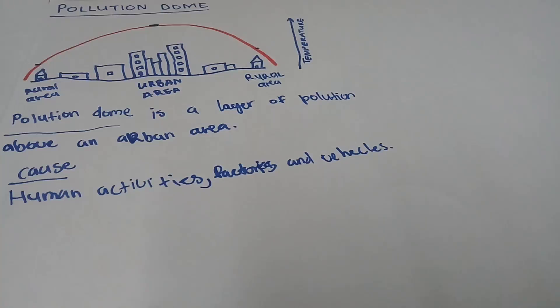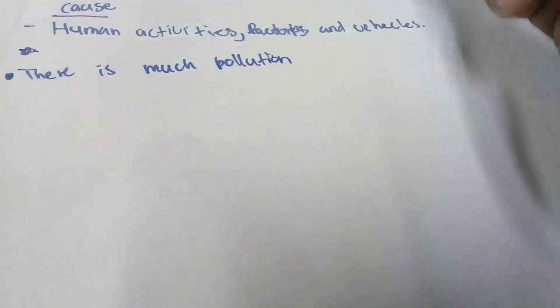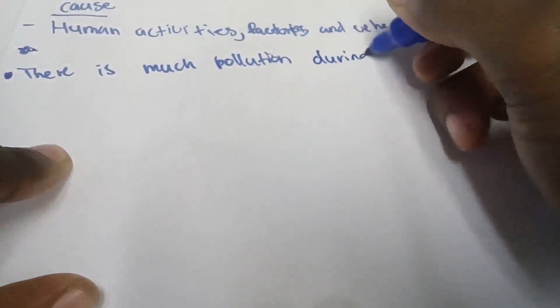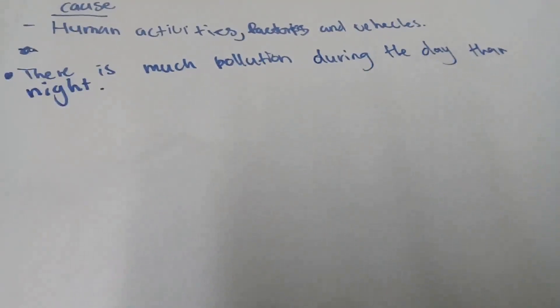The pollution dome is higher during the day and lower during the night. There is much more pollution during the day than the night, so this causes the pollution dome to rise higher during the day and become lower at night.